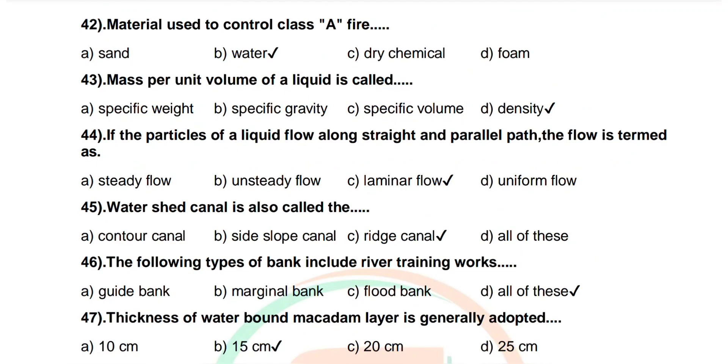Question number 42: Material used to control class A fire. Options are sand, water, dry chemical, foam. Correct answer: water.